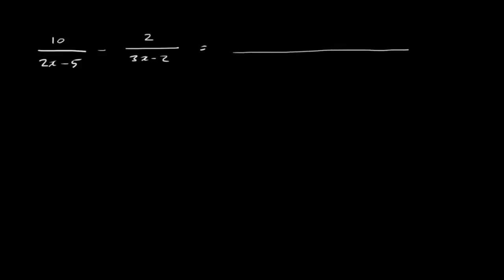Let's look at another one. We take 10 over 2x minus 5 and subtract 2 over 3x minus 2. Same approach — draw our division line. The lowest common multiple is the two denominators multiplied: 2x minus 5 times 3x minus 2. What did we do to 2x minus 5 to turn it into this? We multiplied by 3x minus 2, so we must multiply the 10 by 3x minus 2. This converts the first fraction into an equivalent form — it's exactly the same fraction, just a non-simplified version.